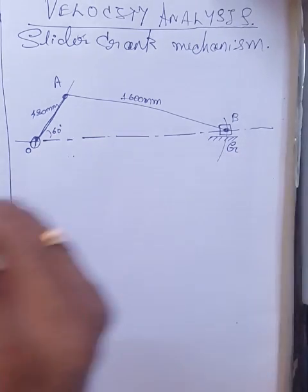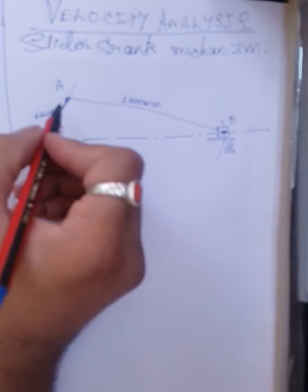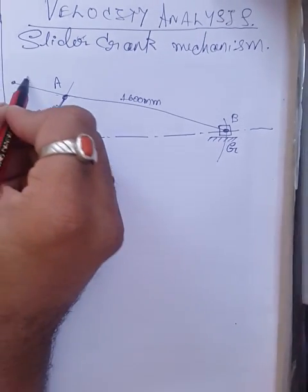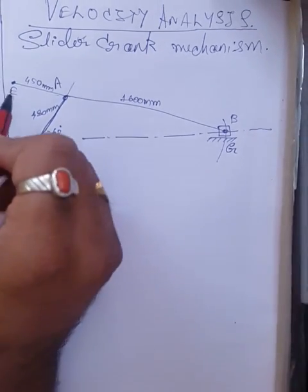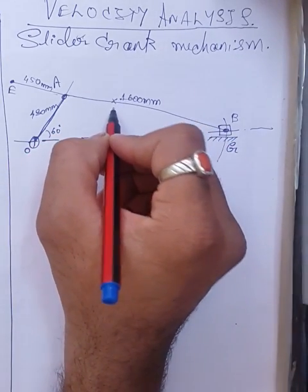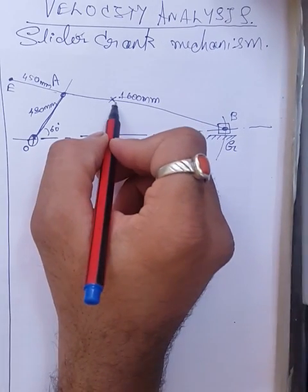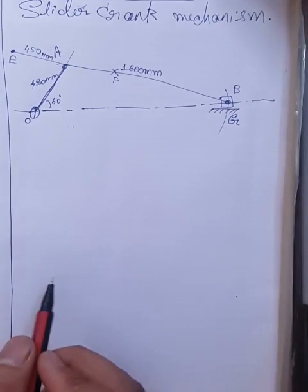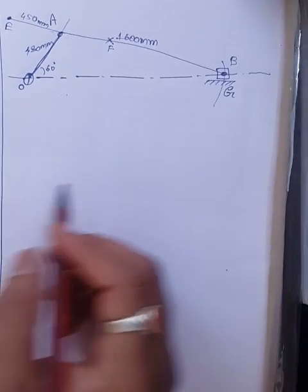The connecting rod has been extended beyond B by another 450 mm to meet point E. We need to find the velocity of point E, the position of point F on AB such that F has the least absolute velocity, and also the angular velocity of the connecting rod.